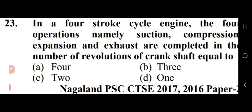In a 4-stroke cycle engine, the four operations — suction, compression, expansion and exhaust — are completed in 2 revolutions of the crankshaft. The right answer is option C, that is 2. In a 4-stroke engine, the working cycle is completed in 4 strokes of the piston or 2 revolutions of the crankshaft.